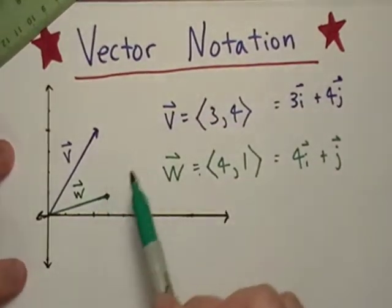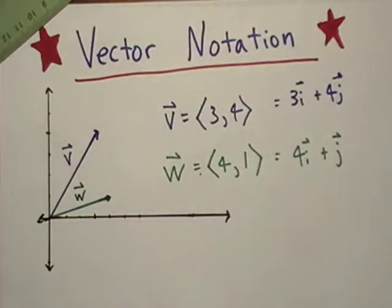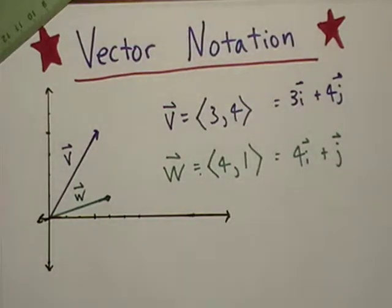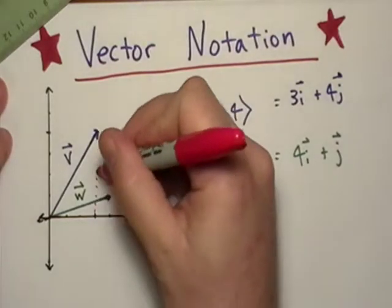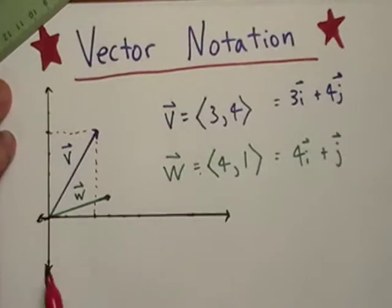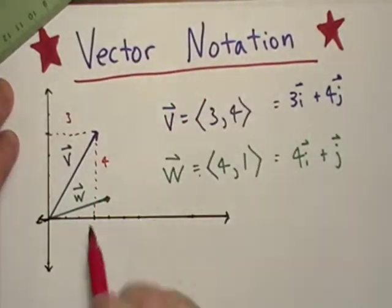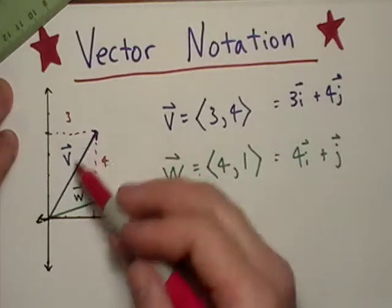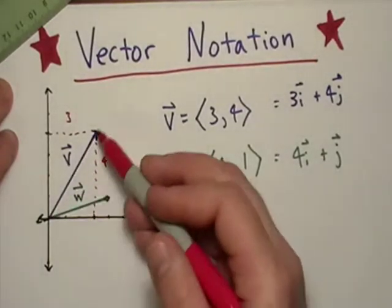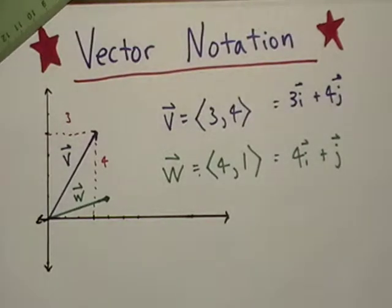Notice if we connect these via triangle, take vector v for instance. If I look at the vertical component and the horizontal component - this is 3, this is 4 - and use the Pythagorean theorem, I get the hypotenuse of the triangle. Essentially, we can find the magnitudes using the Pythagorean theorem.